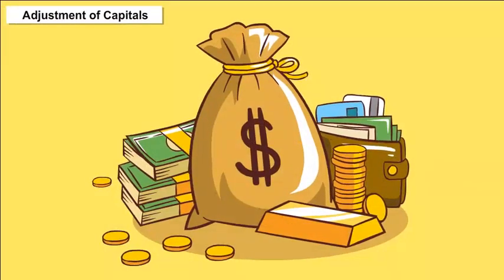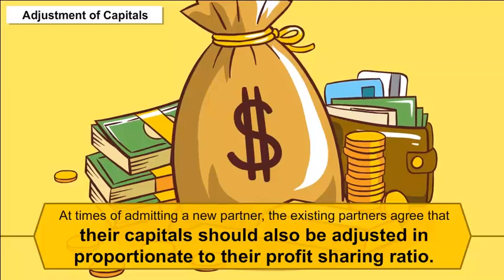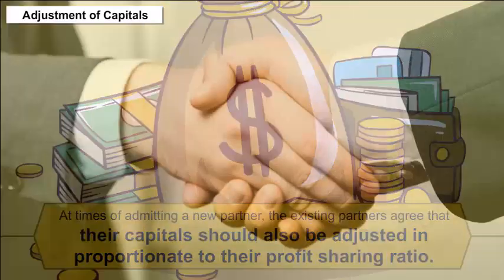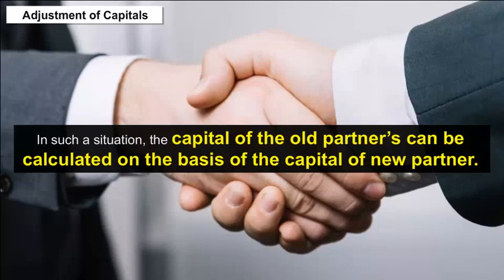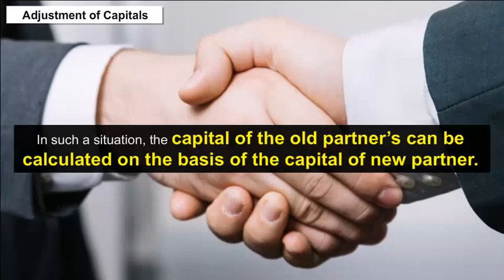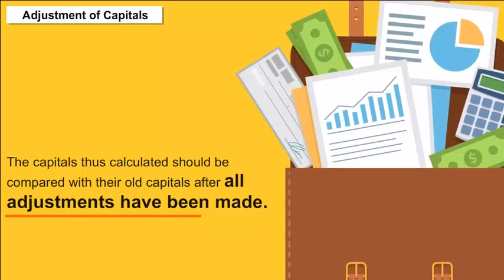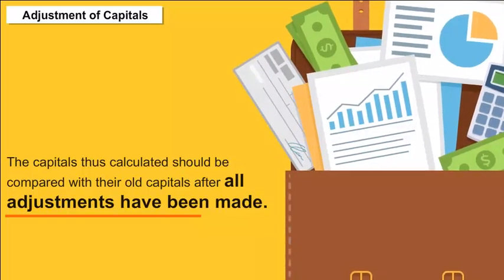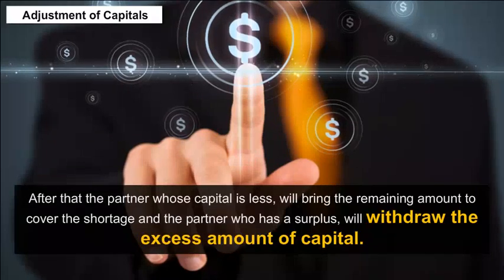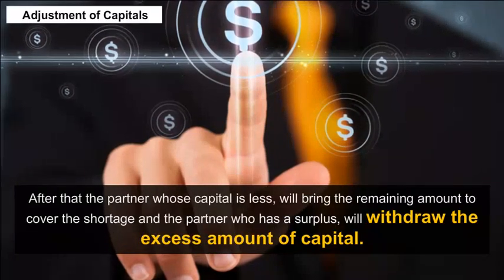Adjustment of capital: At the time of admitting a new partner, the existing partners may agree that their capitals should also be adjusted in proportion to their profit sharing ratio. In such a situation, the capital of the old partners can be calculated on the basis of the capital of the new partner. The capitals thus calculated should be compared with their old capitals after all adjustments. The partner whose capital is less will bring the remaining amount to cover the shortage, and the partner who has a surplus will withdraw the excess amount of capital.